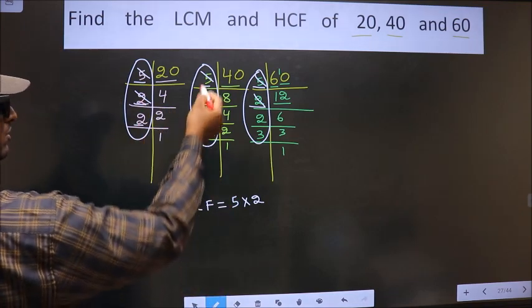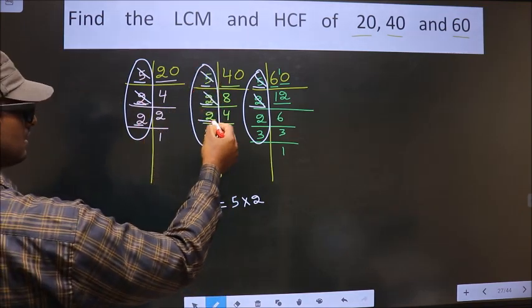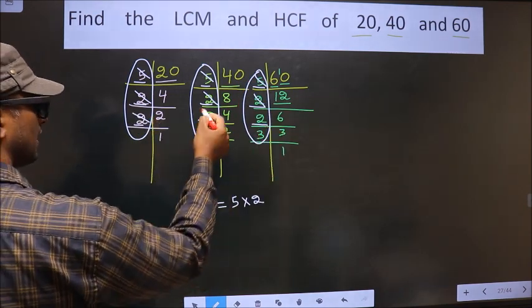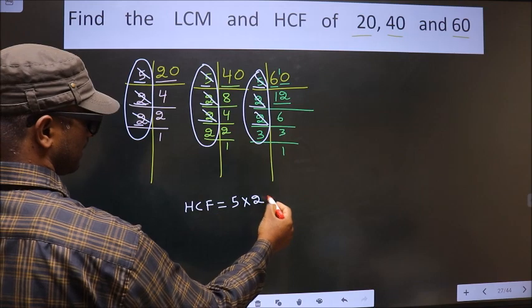Next number is 2. Do we have 2 here? Yes. In the next place, do we have 2 here? Yes. So you cut 2 right here.